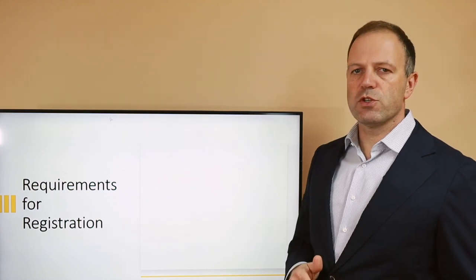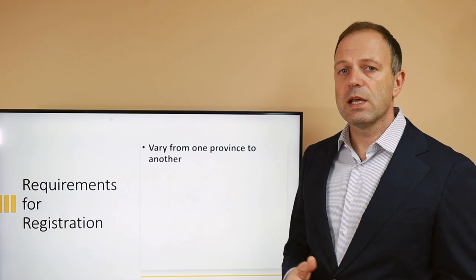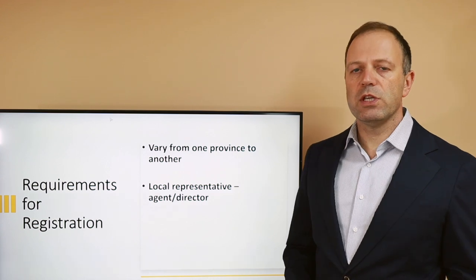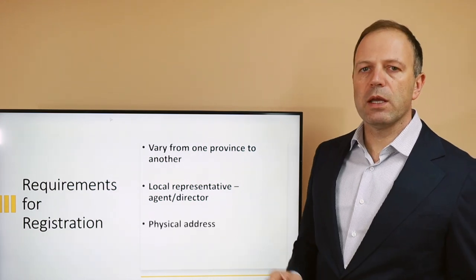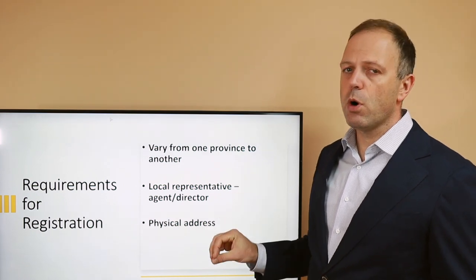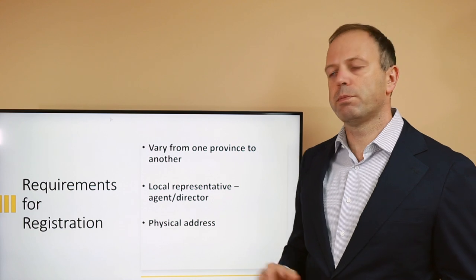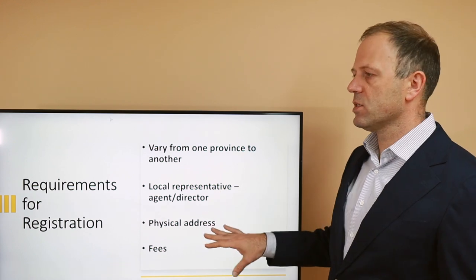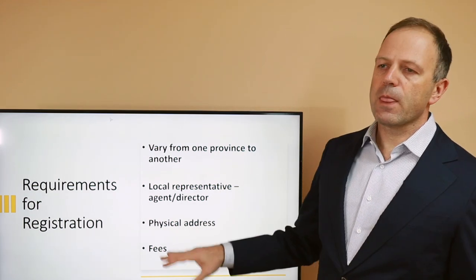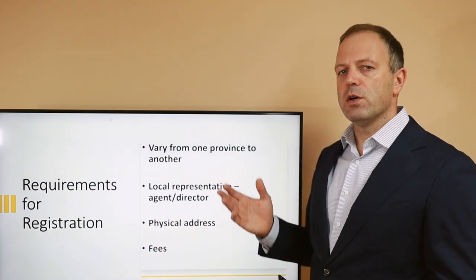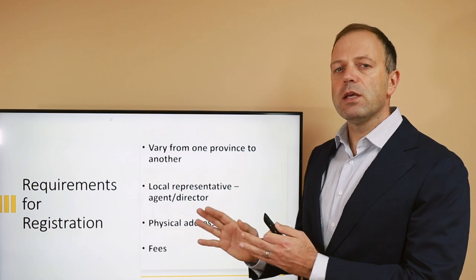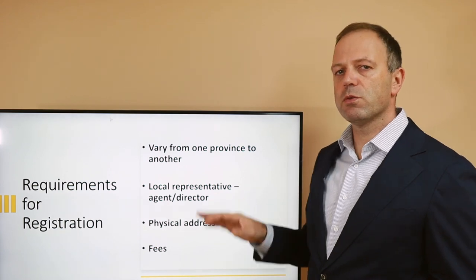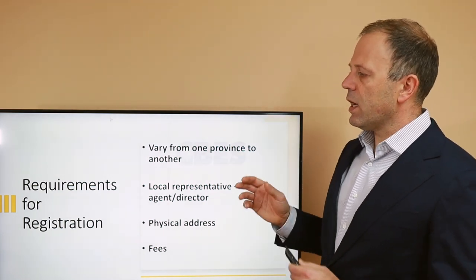Requirements for registration vary from province to province. Some will require a local director, attorney, or agent for receipt of legal documents. Most will require a physical location address — not a P.O. box — in the province where you want to process the extra-provincial registration, which makes sense since having active business presence there means you would have some kind of physical location. Each province will also require you to pay fees. Ontario, by the way, is free only when done together with the federal incorporation — if you register later, you will have to pay separate fees.